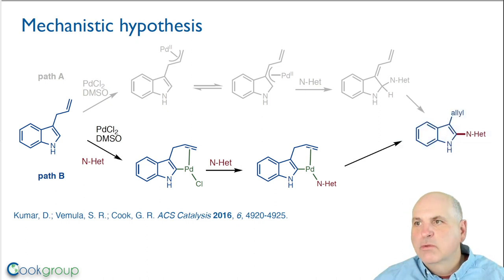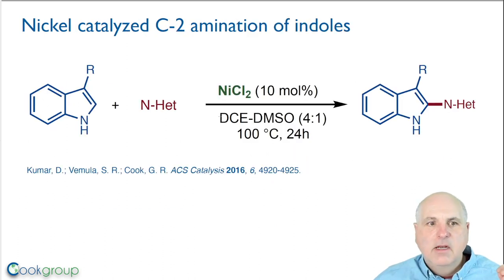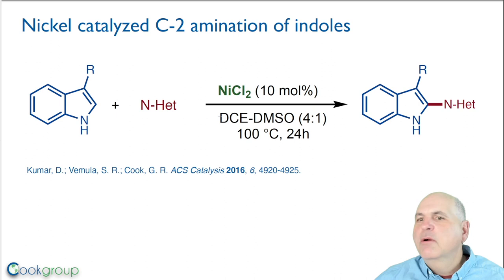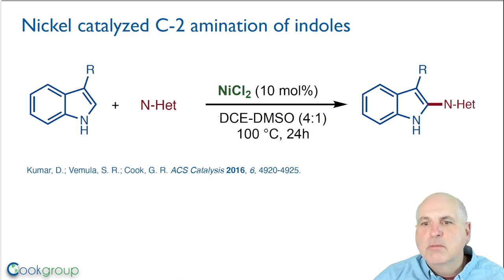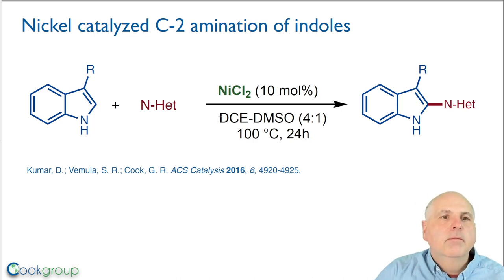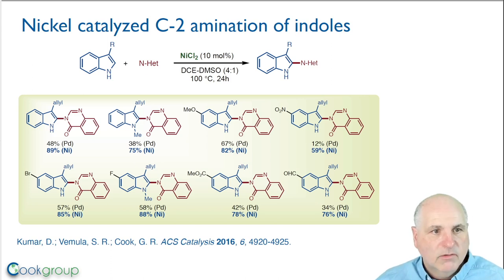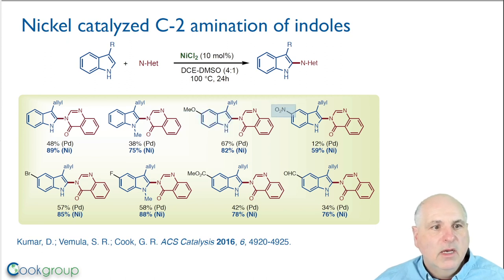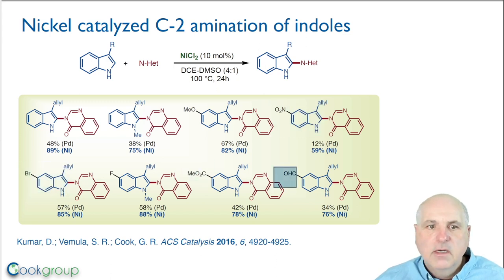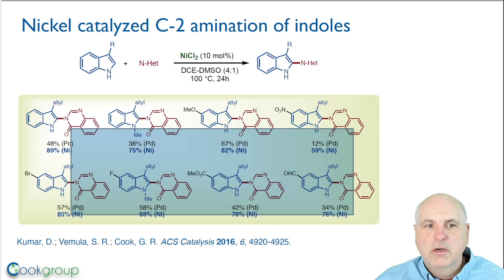This observation encouraged us to explore a variety of different metals to see if they could also do this reaction, and we were very pleased to discover that simply using nickel dichloride — a relatively inexpensive, earth-abundant metal — performed extremely well, in fact much better than palladium. We think that's because the reductive elimination step is more facile with nickel than with palladium. The scope of this reaction is quite large: we can use a variety of substituted indole derivatives with electron-donating groups, electron-withdrawing groups, halogens, esters, and aldehydes — all giving very high yields of the coupled product with quinazolinone, with nickel consistently outperforming palladium.